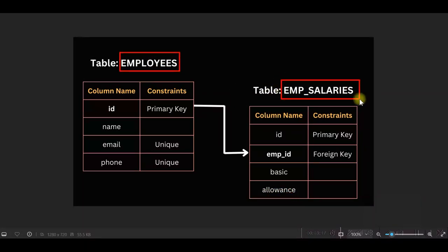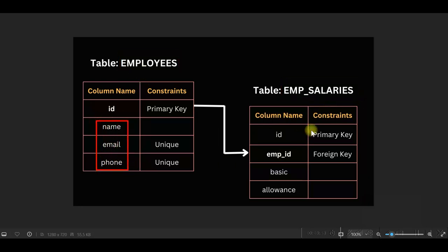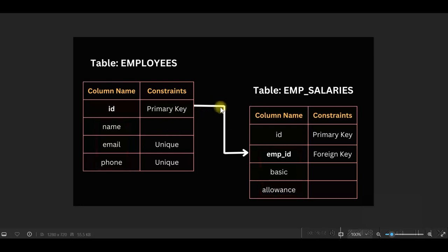In the employees table, we'll insert name, email, and phone. In the employee salaries table, we'll insert employee ID, basic salary, and allowance. There is a relationship between these two tables — employee ID is the foreign key in the employee salaries table, coming from the primary key of the employees table.